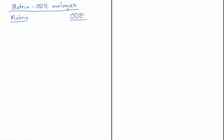I'm going to do a side-by-side comparison of a matrix equation and an ODE. We have a simple matrix equation, let's say AX equals zero, and that is what we call a homogeneous equation.